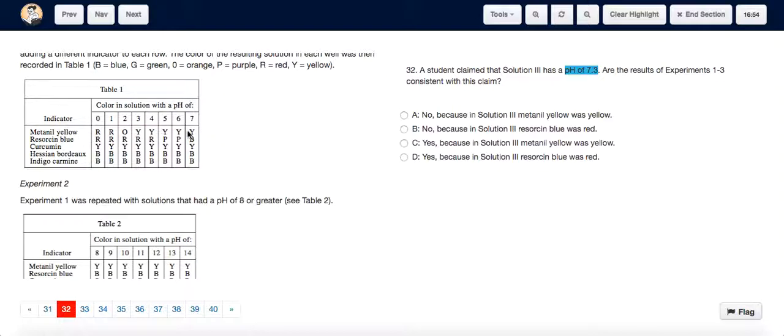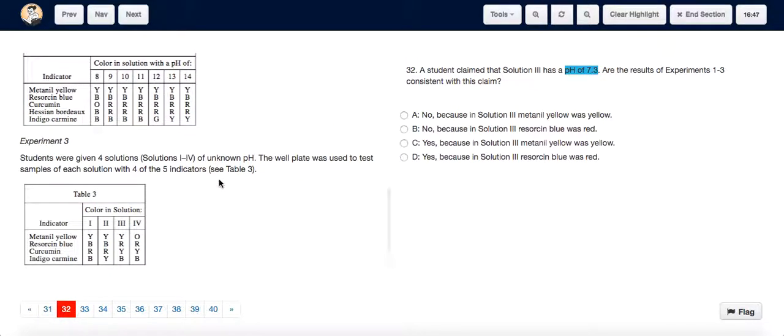...has a color yellow, resorcin blue has a color blue, curcumin has a color yellow, and indigo carmine has a color blue. So the pattern goes yellow, blue, yellow, blue.